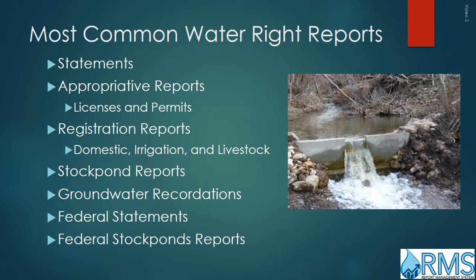The most common water right reports are Statements, Appropriative Reports — which includes licenses and permits — Registration Reports — which include domestic, irrigation, and livestock stockpond reports — groundwater recordations, federal statements, and federal stockpond reports. These will not all be covered in this video. More information can be found at the Water Board's website.